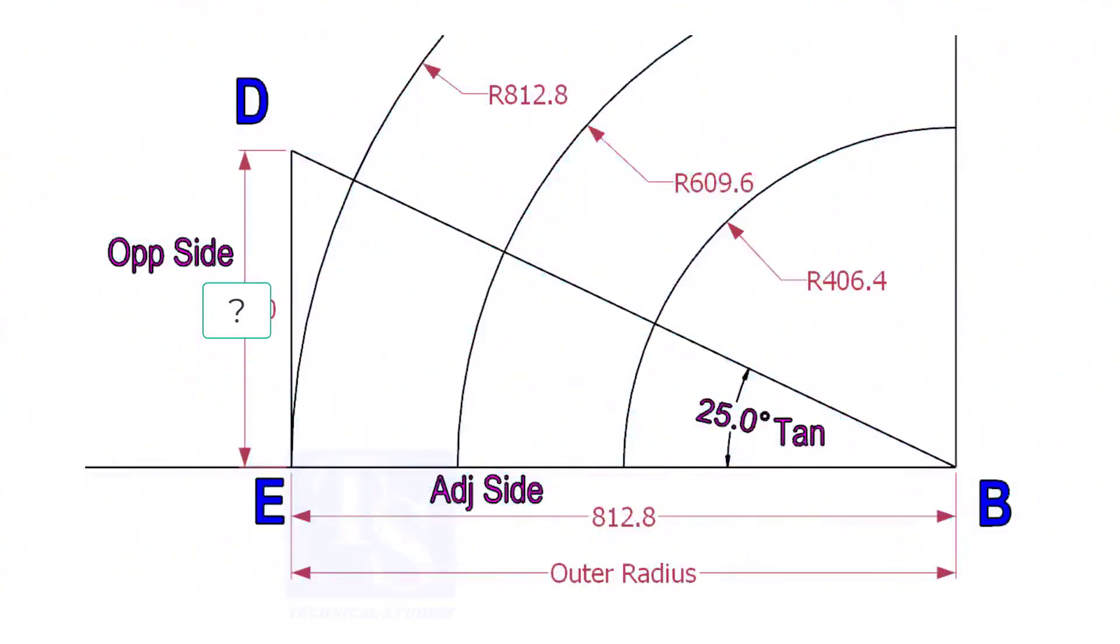Mark a line 25-degree rotated from the base line AB. To draw the line DB, we need to know the length of the line ED. To calculate ED, we need to apply the formula: tan theta equals opposite side divided by adjacent side.